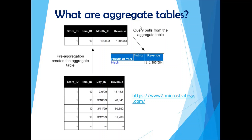Aggregate tables are pre-stored aggregations in a separate table that is physically part of your data warehouse. This takes up some space, but your reports will be very fast. As per your requirements, you have to choose whether to implement aggregate tables or not.